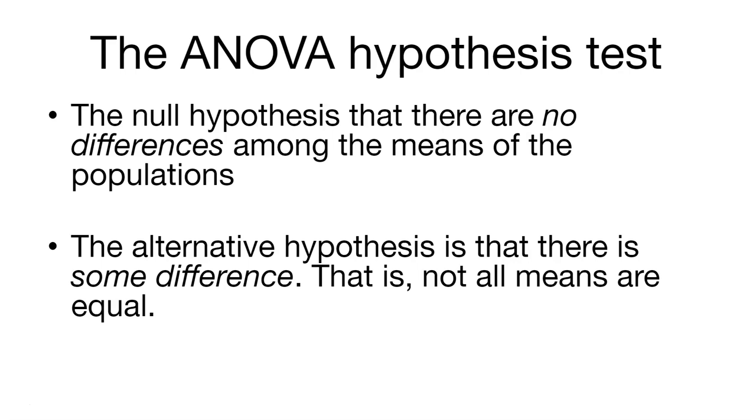The alternative hypothesis is that there is some difference. That is, we can say that not all of the means are equal. And so how we might write that out is this. Our null hypothesis, H sub 0, is mu 1 equals mu 2 equals all the way up to mu i. All of the means are the same. The alternative hypothesis would say that not all of the means are equal.